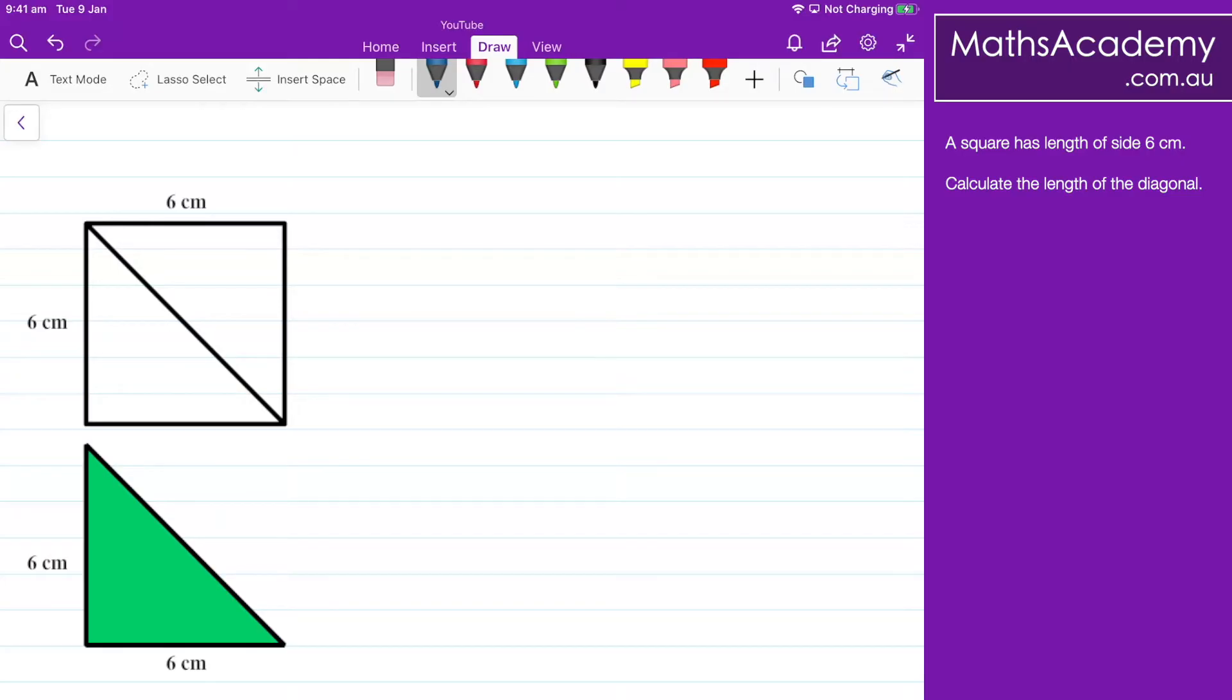We can see that the left hand side is 6 centimeters and the bottom length is 6 centimeters and we're trying to find the length of the hypotenuse. Now let me just label that hypotenuse as side c.